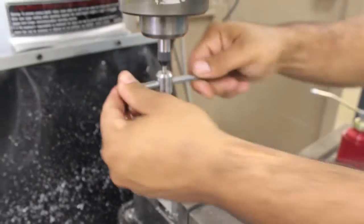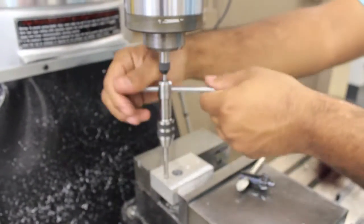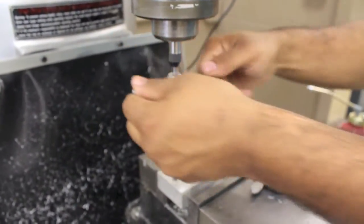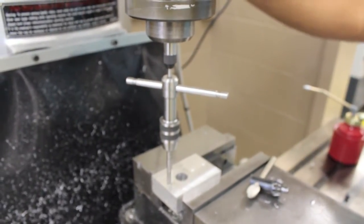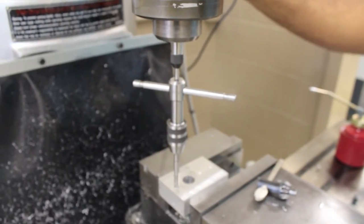While applying a force on the quill feed handle, turn the tap clockwise and begin cutting threads. The center used here is spring loaded and keeps constant pressure on the tap.